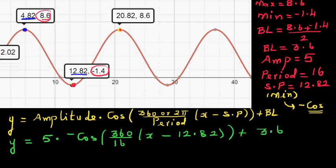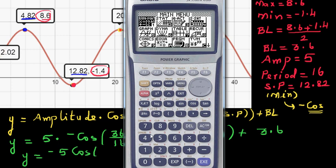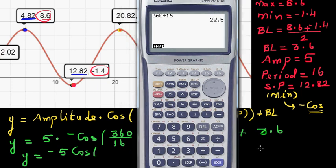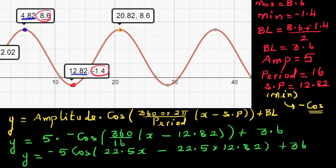So y equals negative 5 cosine of 360 divided by 16, which is 22.5, times x minus 22.5 times 12.82 — the calculator will do the rest for us — plus 3.6. So this is the equation of this graph.